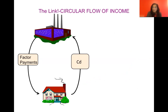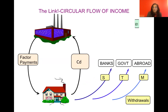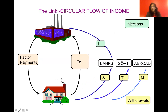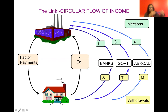Now, what are the three injections back into this flow? Banks take your savings and channel those funds to firms through financial institutions — so money comes back into the flow as investment. The government takes tax revenue and spends it back on the economy through infrastructure and so forth. Third, if your country is buying goods and services from abroad, it's also selling to other countries and earning income — those are export earnings.